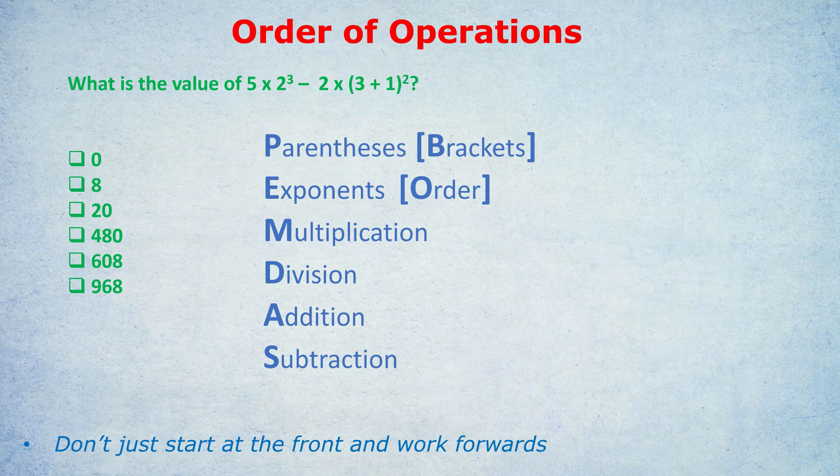Let's see PEMDAS in action. We start with the brackets: we have 3+1 inside, so we calculate that first — 3+1 is 4. Now we write 4 in place of the bracket. Next, should we do the multiplications? No — we do the exponents first. So we calculate 2 cubed and 4 squared, since those are the numbers with exponents.